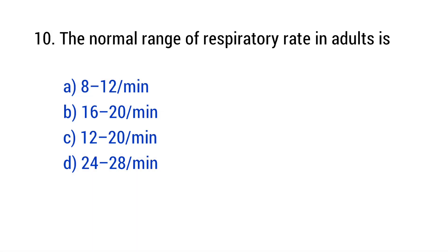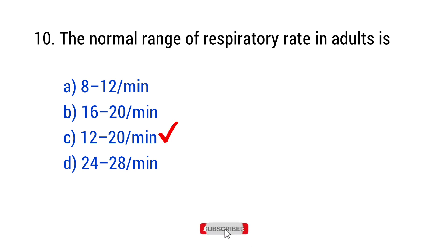Question number 10: The normal range of respiratory rate in adults is? The right answer is option C — 12 to 20 per minute.